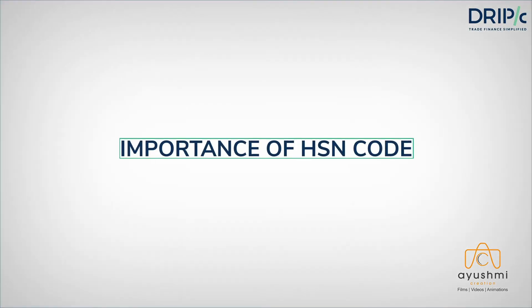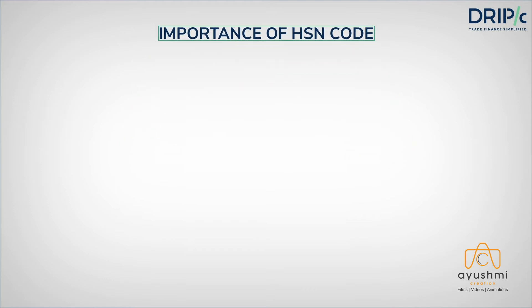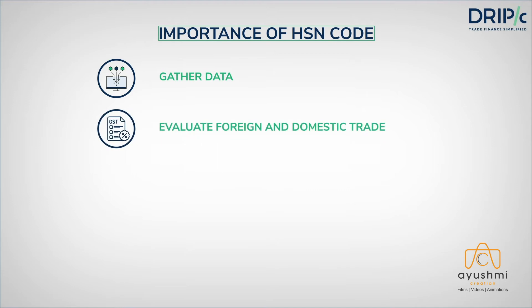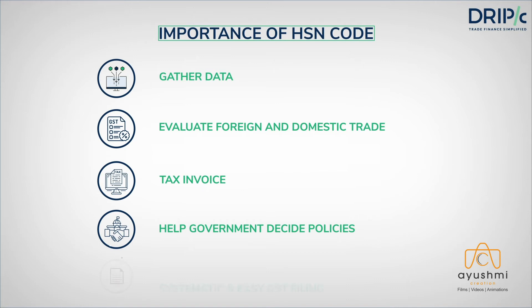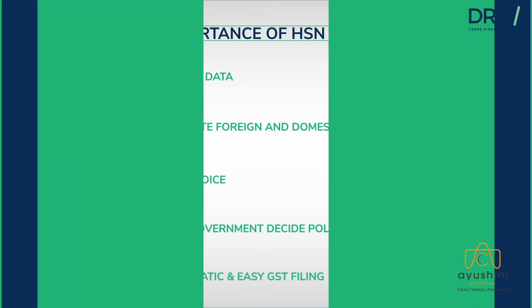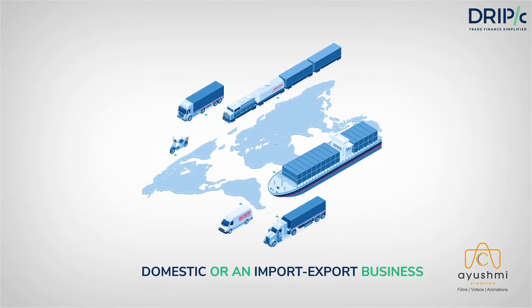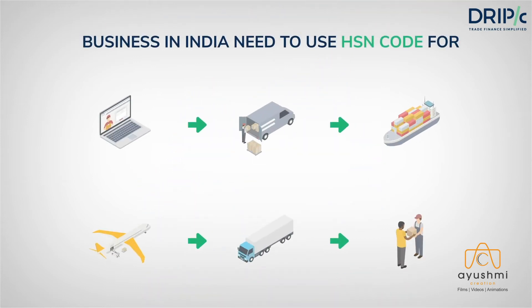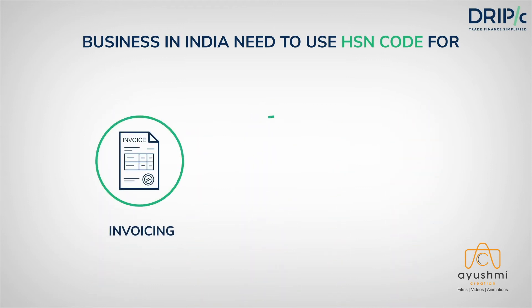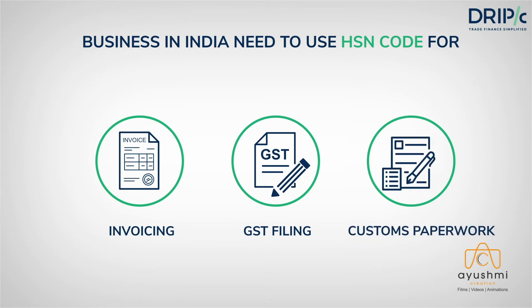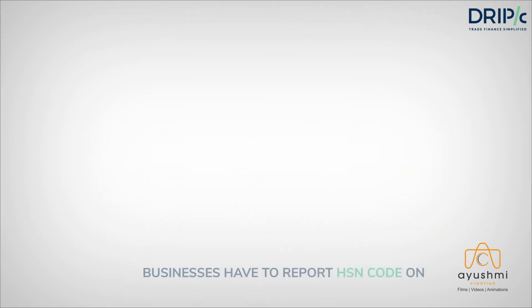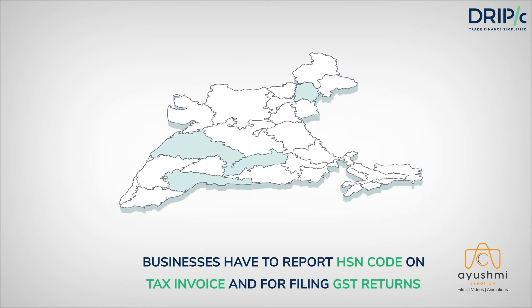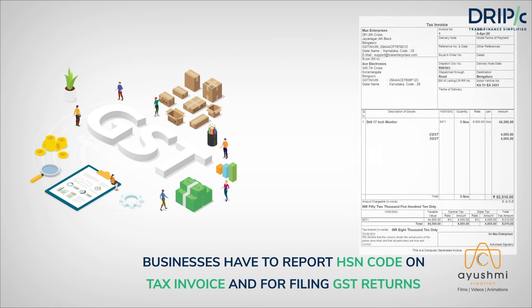Now, why is HSN code important? HSN code is useful for gathering data, evaluating foreign and domestic trade happenings internally as well as outside the country, tax invoicing, and helping the government decide various trade policies. It also enables systematic and easy GST filing. Whether you have a domestic or an import-export business dealing in goods or services, HSN code is important for all trade-related activities like invoicing, GST filing, and customs paperwork for import and export.